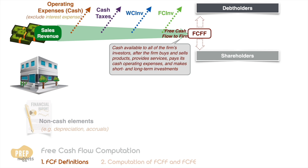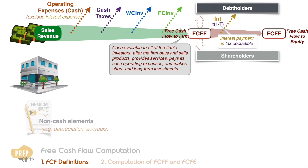First, the firm pays the bondholders their rightful interest, as these are obligations. The net cash that leaves the company for interest payments is reduced by the marginal tax rate, as interest payments in many jurisdictions are tax deductible. The amount that is left is called free cash flow to equity, or FCFE. However, the firm may also pay back the principal of some of its debt or borrow more money from bondholders — we call this net borrowing. FCFE is therefore the FCFF after debt financing, so the amount is only available to shareholders.